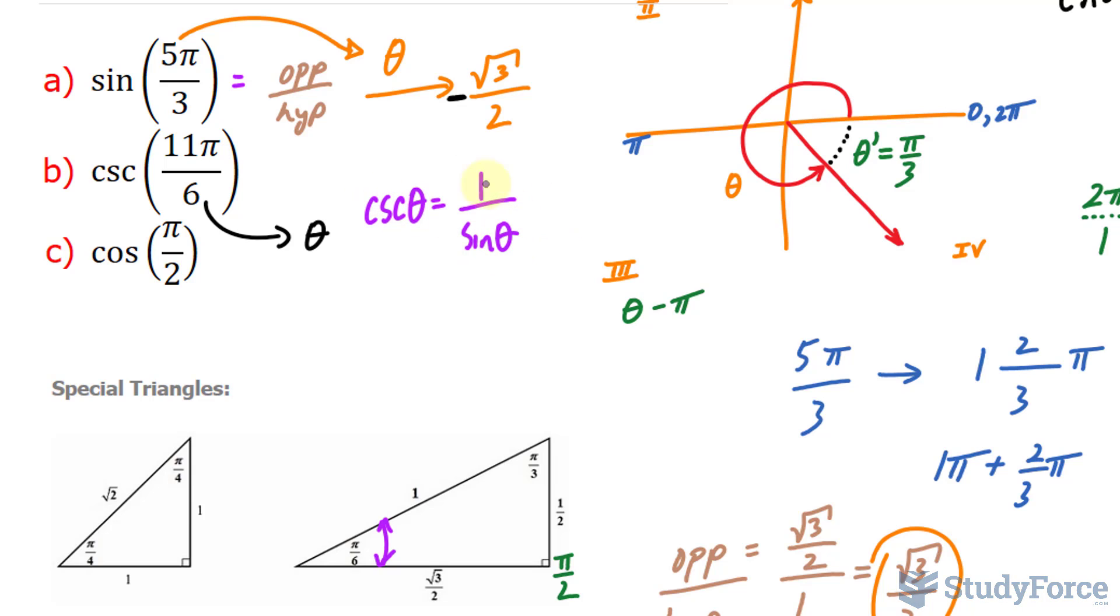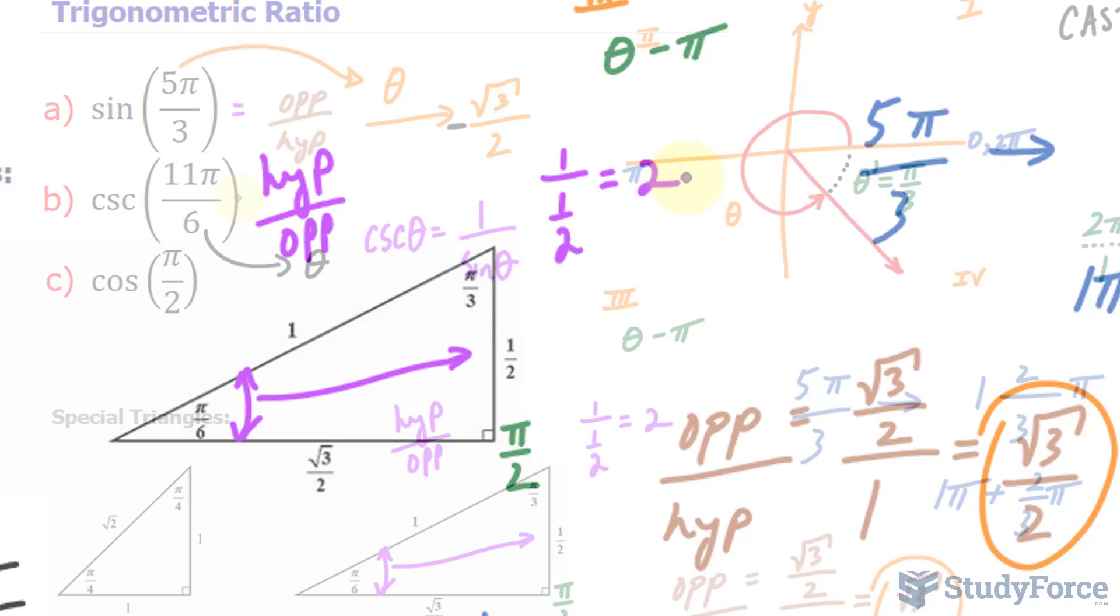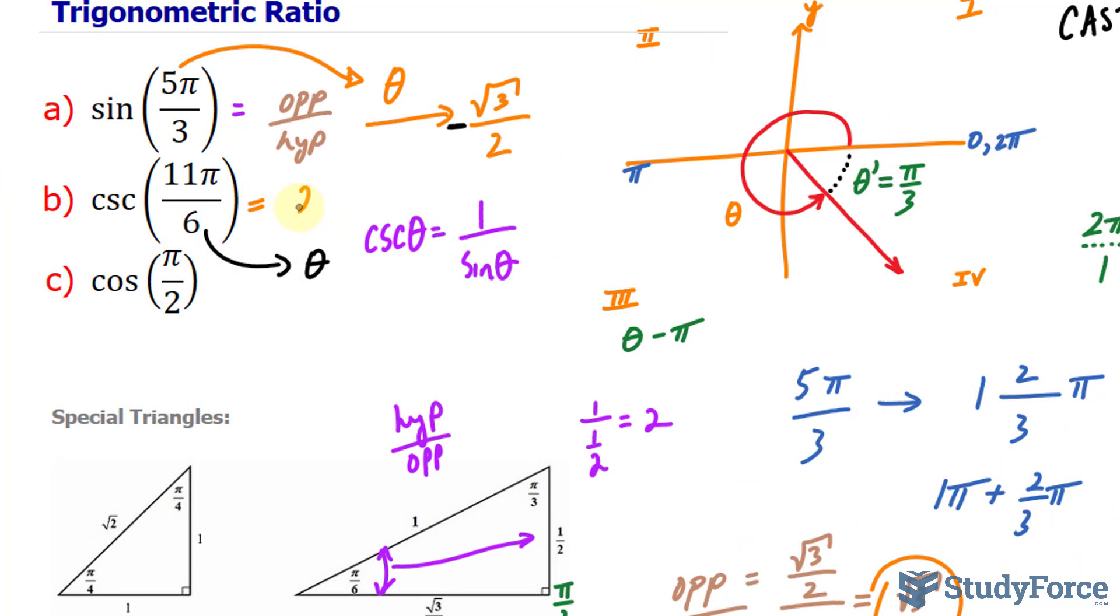Therefore, cosecant, since it's the reciprocal of sine, will be hypotenuse over opposite. So we'll be taking the hypotenuse over opposite using this reference angle. Hypotenuse is 1. The opposite is half. So 1 divided by half. You can use your calculator for this, but the answer is 2. Therefore, the answer for this is equal to 2, but we're not done yet.